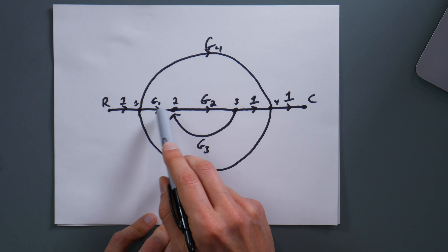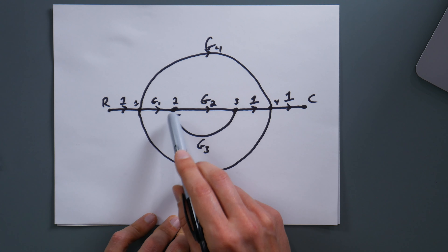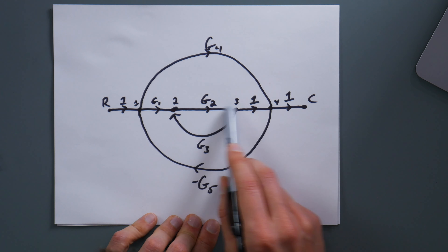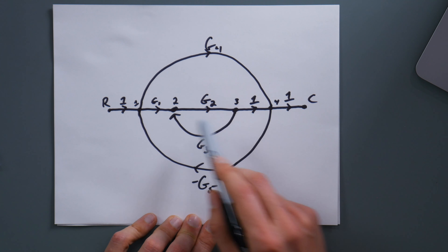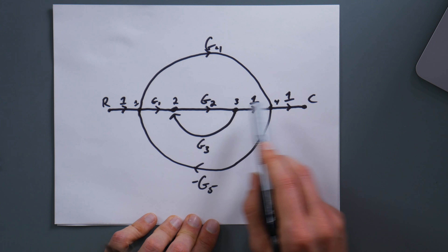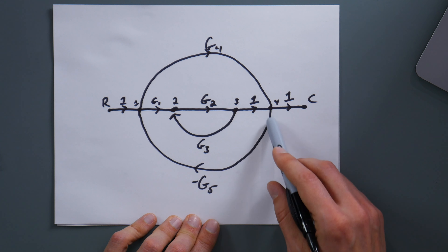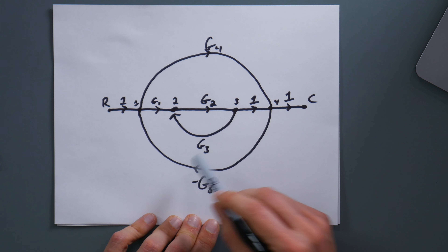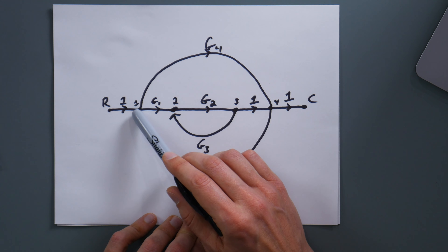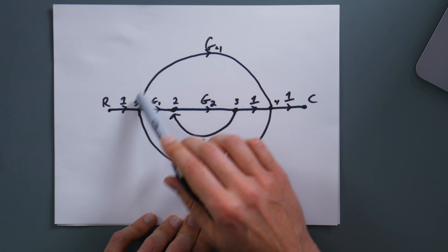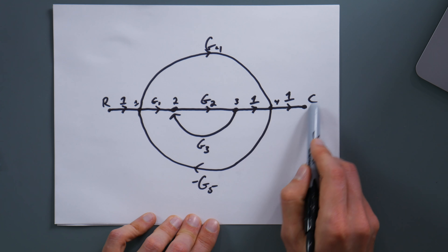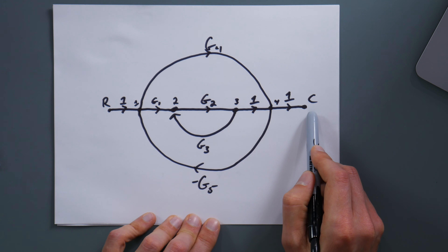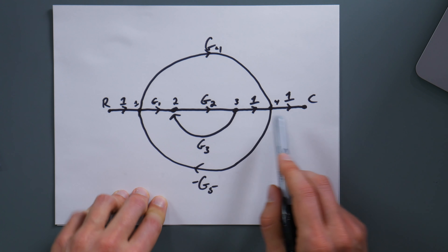A specific type of path is the forward path. If you go forward and then loop back, that is no longer a forward path — it is a path, but not the forward path. A forward path is any path that connects the input node to the output node without looping back. You can have multiple forward paths, which is very common, and identifying all forward paths is part of Mason's rule.